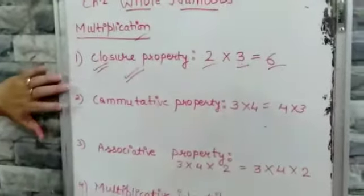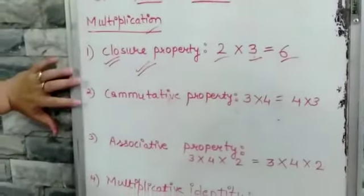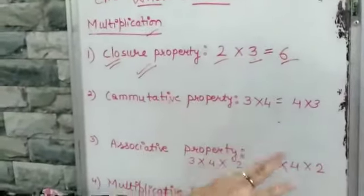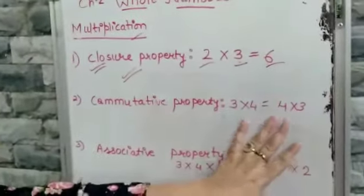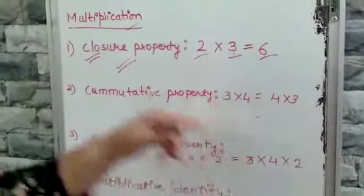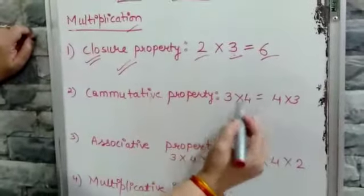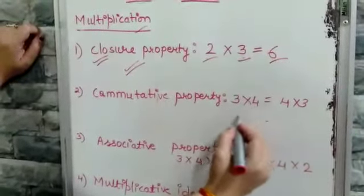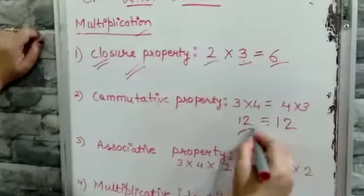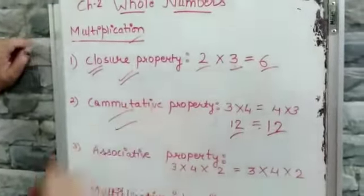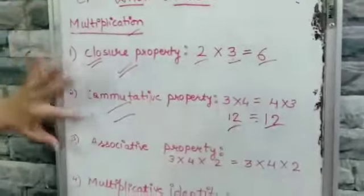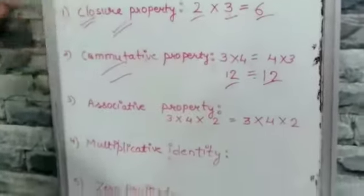Next, commutative property states that if we change the order — A multiplied by B or B multiplied by A — the product which is going to come will remain the same. For example, I have taken the two digits 3 and 4. So, 3 times 4 is 12, and 4 times 3 is also 12. Both products are the same. That means commutative property is true for multiplication. Both properties exist for multiplication.